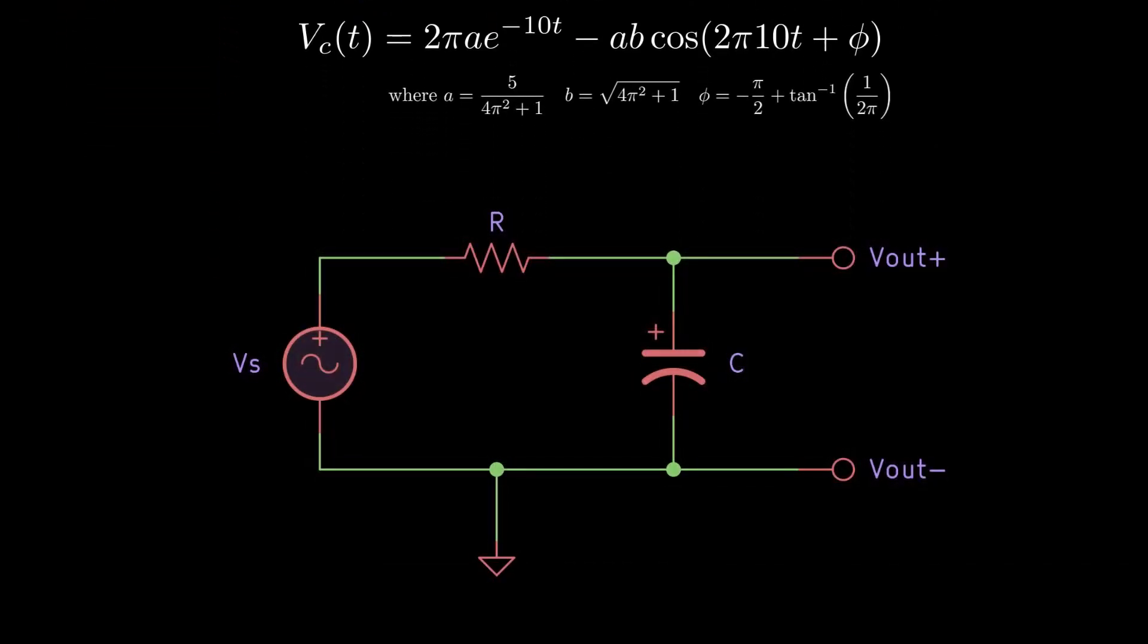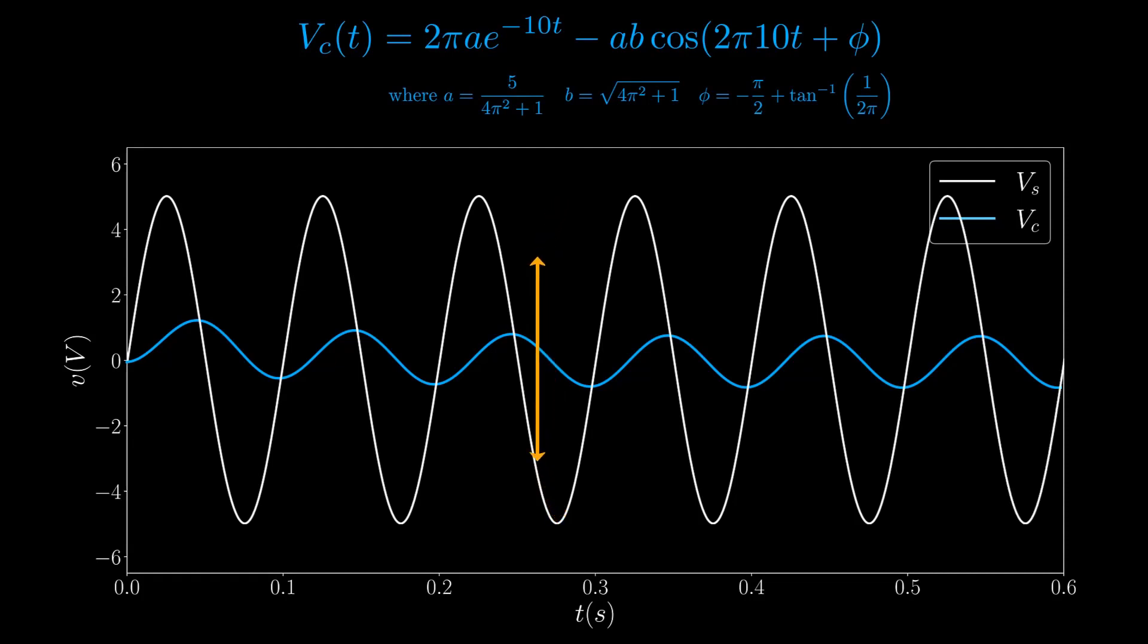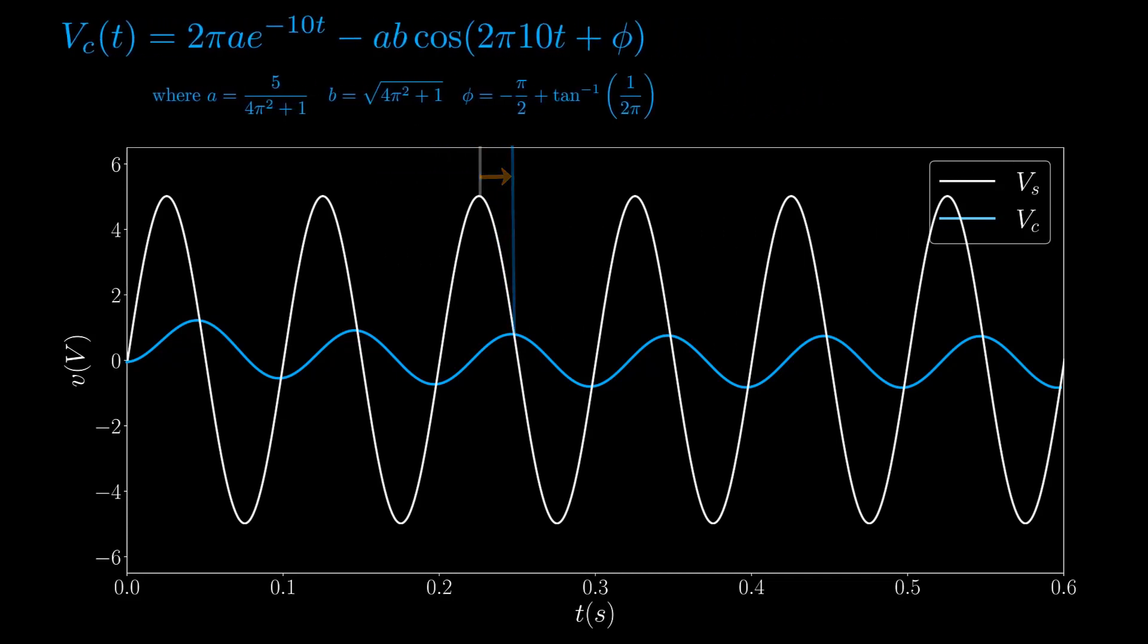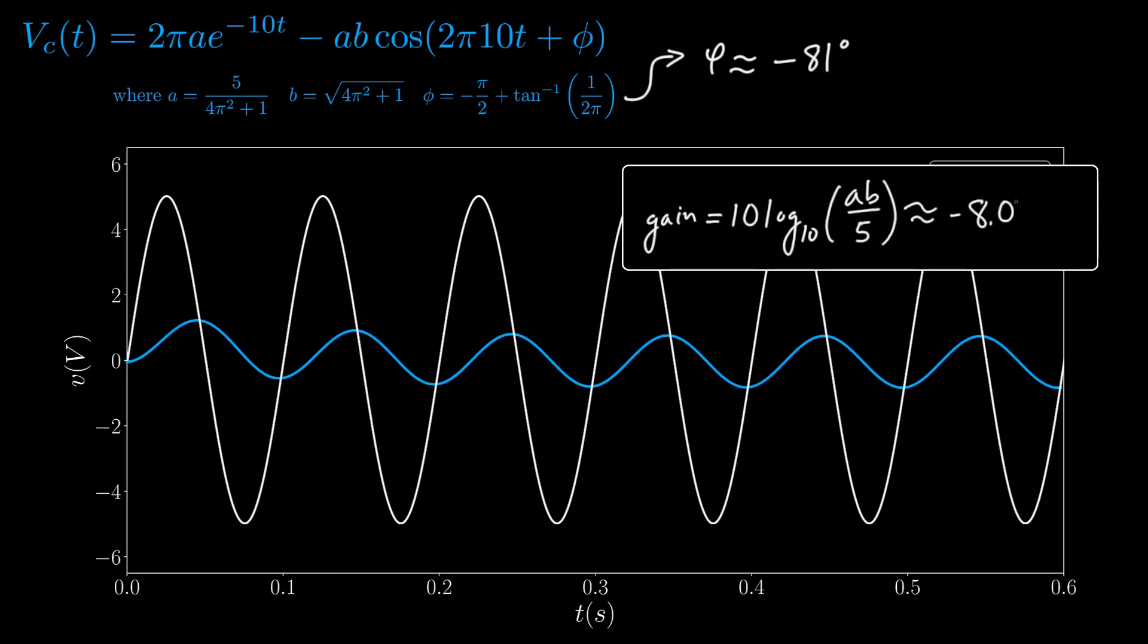I've written the solution for an RC circuit with a 100 kiloohm resistor and a 1 microfarad capacitor. If we plot the solution Vc and the input signal Vs, we'll notice that the magnitude has diminished and the phase has shifted. The phase shift of the sinusoid is approximately negative 81 degrees.